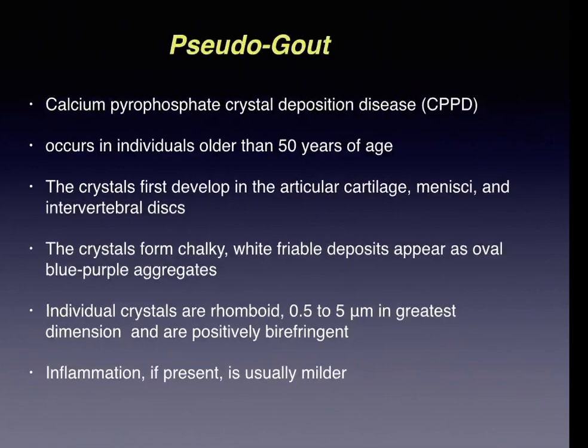Pseudo gout is calcium pyrophosphate crystal deposition disease, occurring in individuals older than 50 years. The chalky white friable deposits form in articular cartilage, menisci, and intervertebral discs. Individual calcium pyrophosphate crystals are rhomboid in shape and positively birefringent. The inflammation caused by these crystals is minimal.